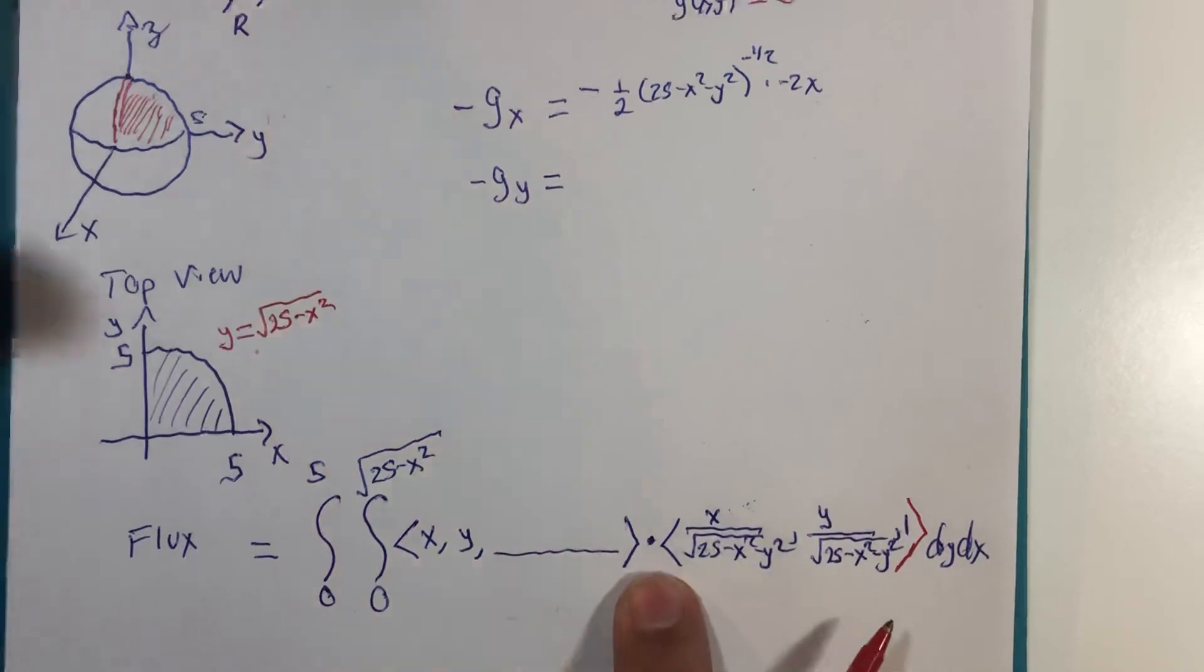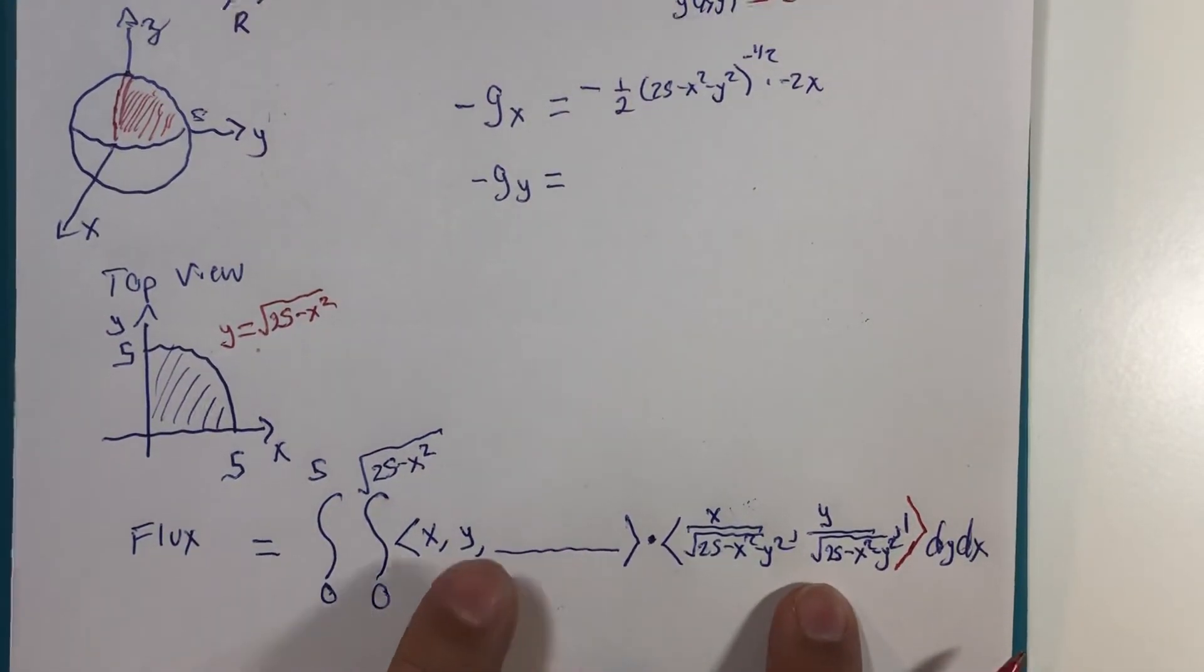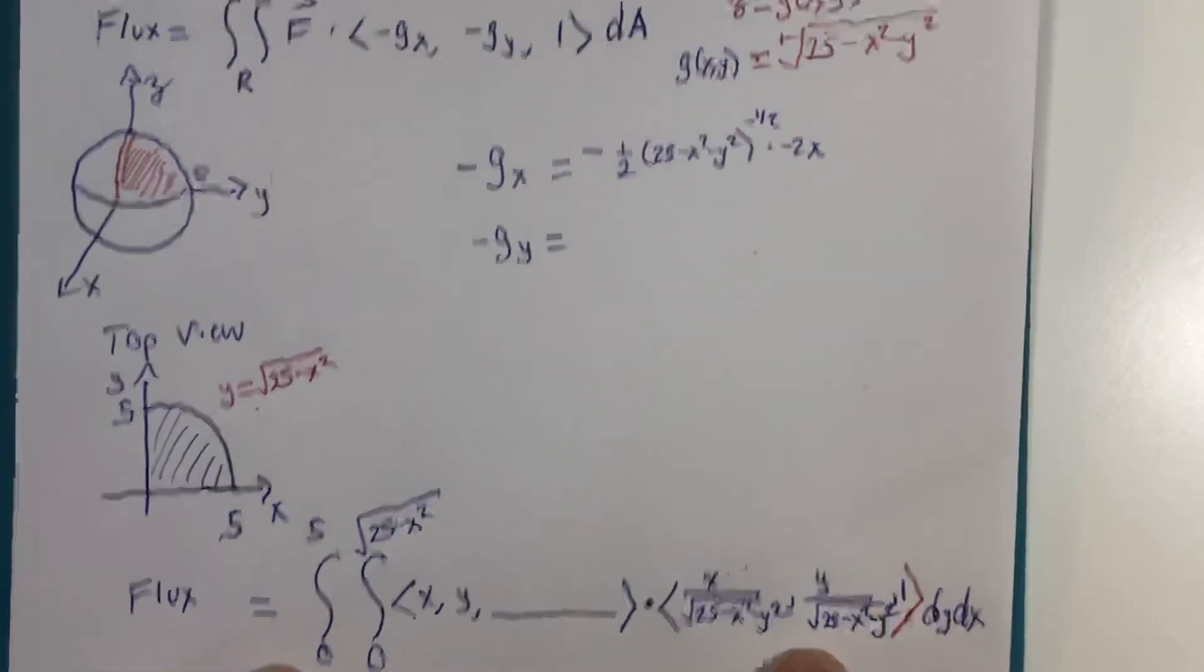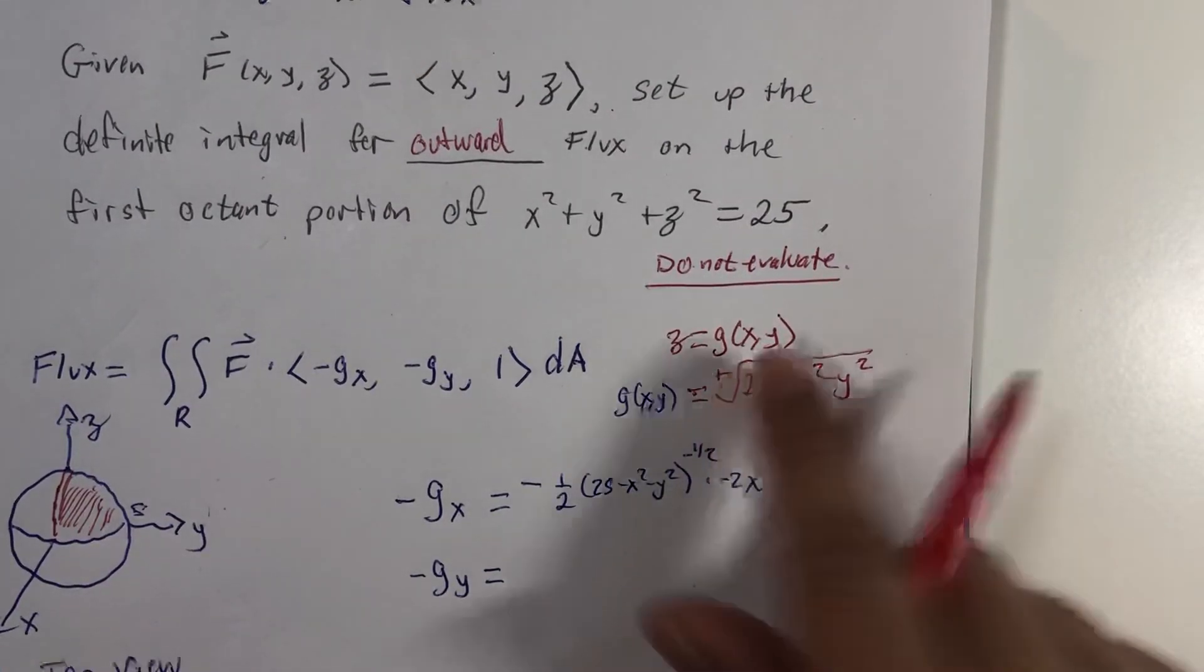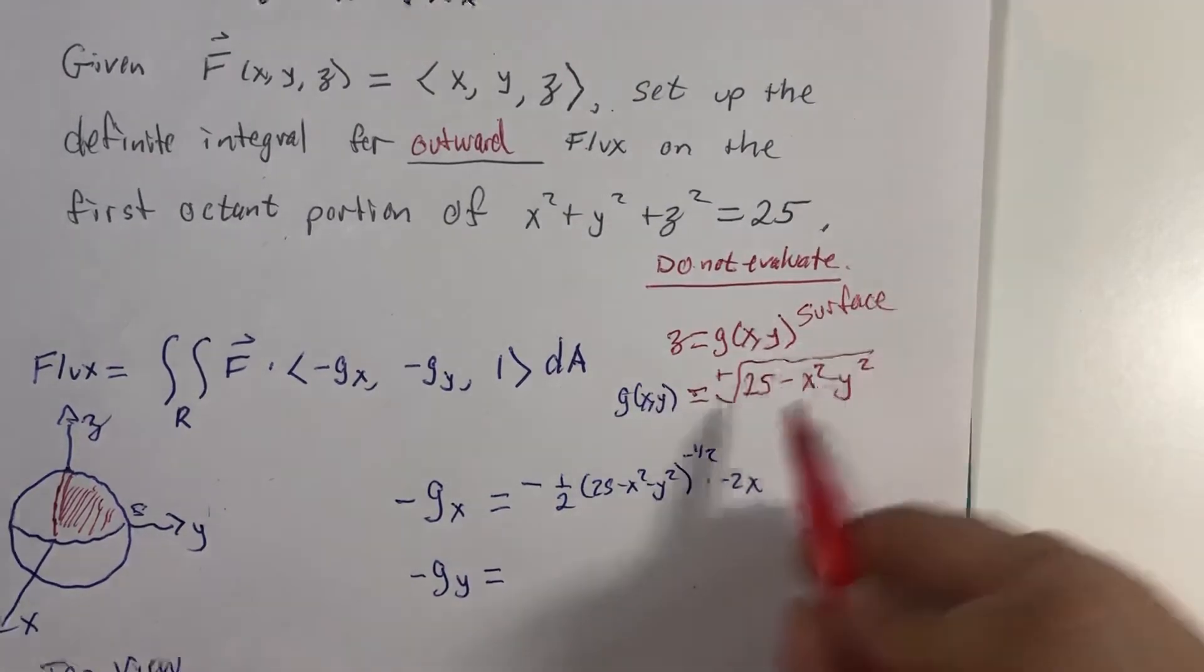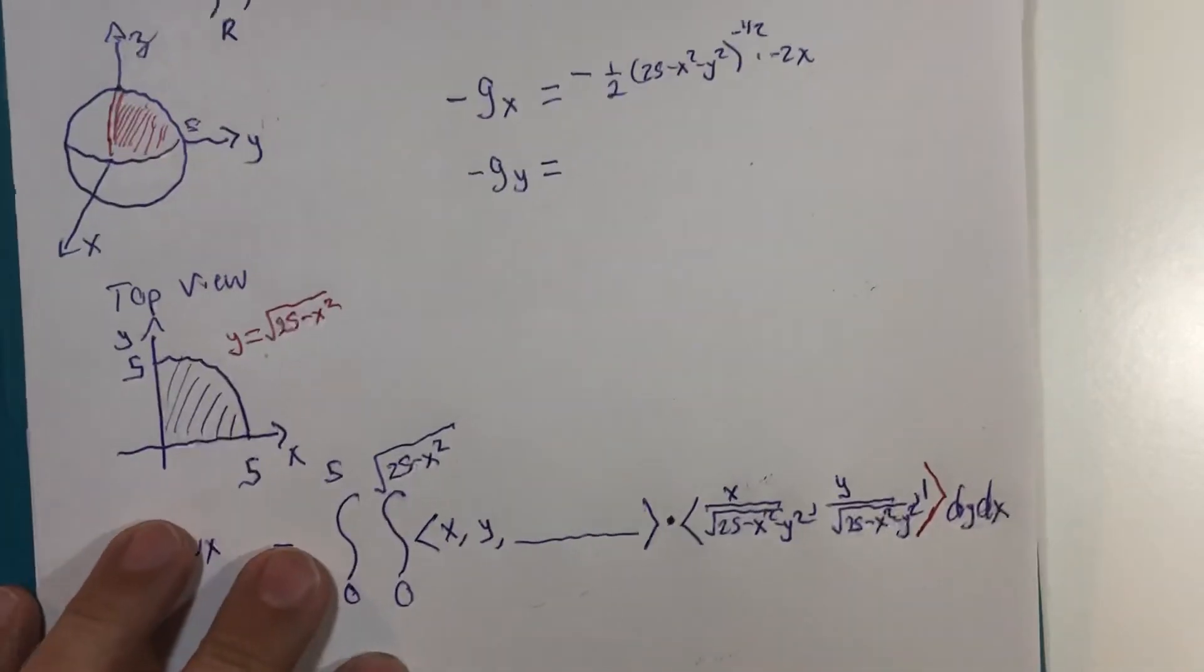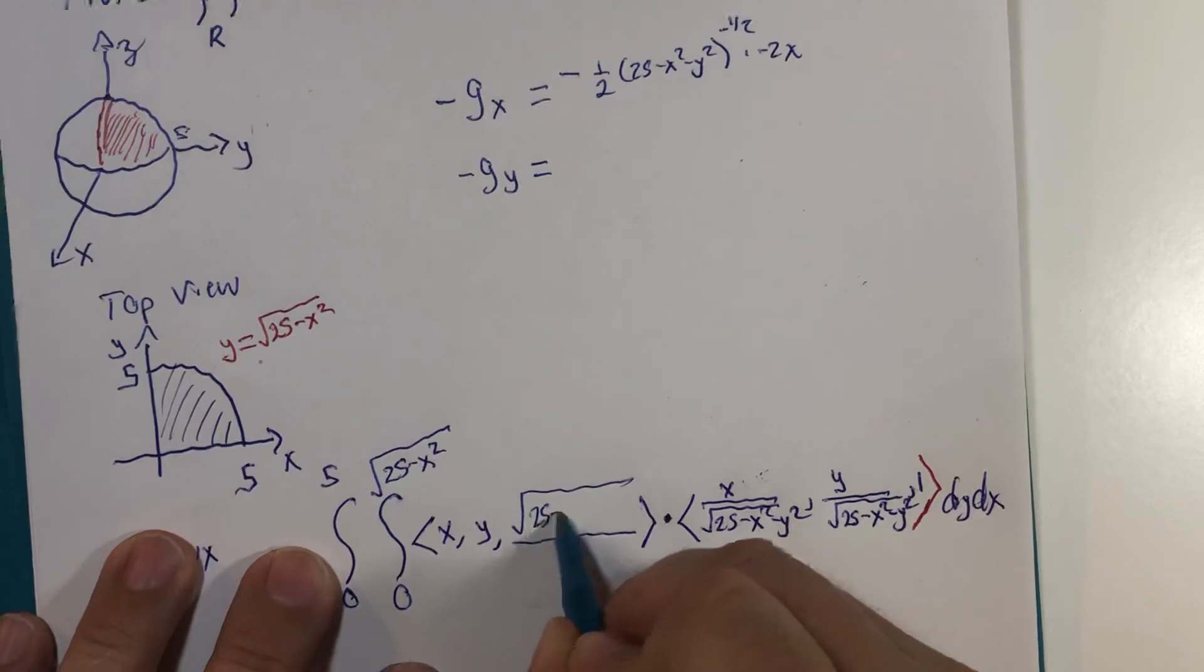Dot product: x components multiplied, y components multiplied, oh yeah z. What was z? Well z is my surface, and I solved it for z equals 25 minus x squared minus y squared in the root.